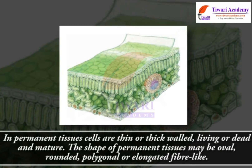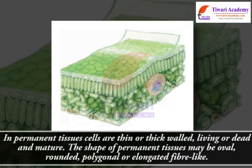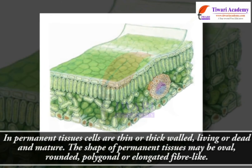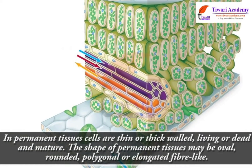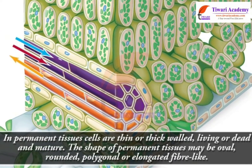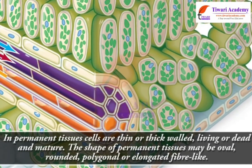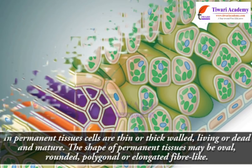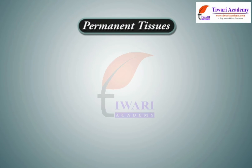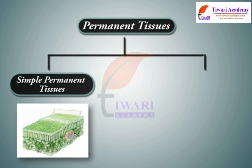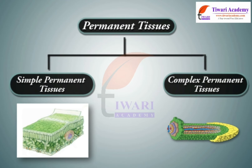In permanent tissues, cells are thin or thick-walled, living or dead, and mature. The shape of permanent tissues may be oval, rounded, polygonal, or elongated fiber-like. Permanent tissues are of two types based on the nature of cells: simple permanent tissues and complex permanent tissues.